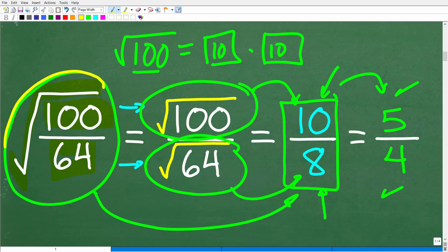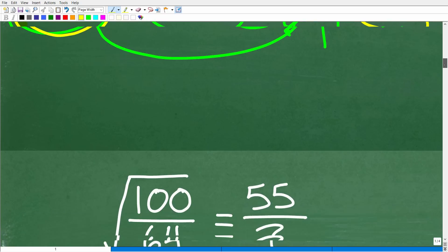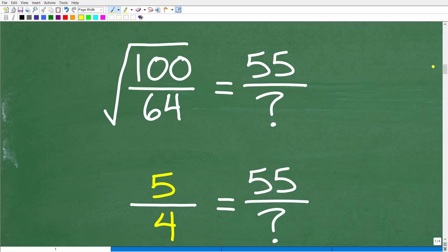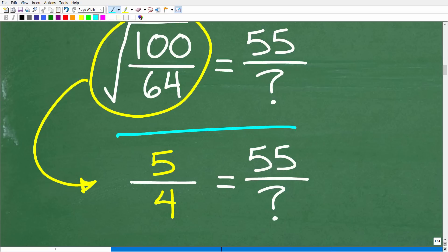Alright, so let's take a look at where we're at here. We just went from this expression, the square root of 100 over 64, and now we know that this whole thing here is equivalent to 5 over 4. Alright, so what does that mean? Well, it means that our problem can be kind of interpreted this way, right? So instead of this whole expression here, we're going to just replace all that with 5 over 4, and now we're looking at this problem. Okay? So this is an equivalent problem and much easier. We have 5 over 4 is equal to 55 over our mystery number.